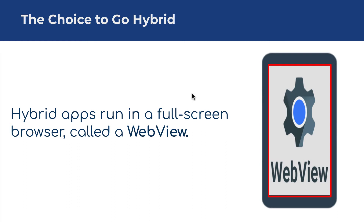Hybrid apps run in a full-screen browser called WebView that is invisible to the user. Through customizable native plugins, they can access the native features of specific mobile devices — such as the camera or Touch ID — without the core code being tied to the device. That means hybrid-built apps can run on any platform or device, all from a single code base, while still delivering a native look and feel.